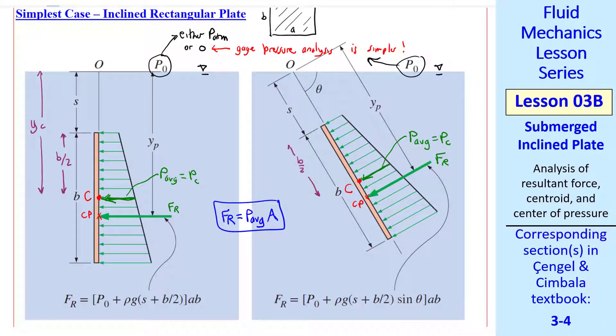Even though the plate is inclined, in this case, the centroid is still B over 2 from the top of the plate, but we're measuring this parallel to the plate. Again, we define YC from the surface to point C, in this case parallel to the plate. In either case, YC is S plus B over 2, which you can see here and here.